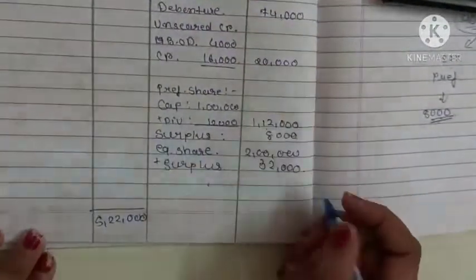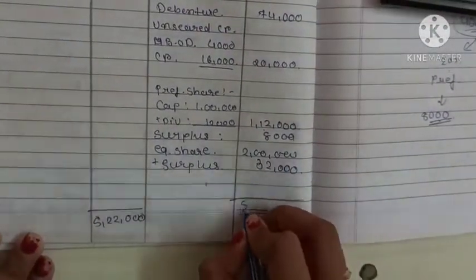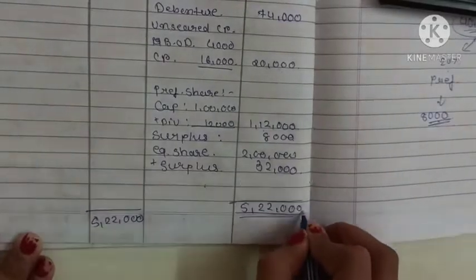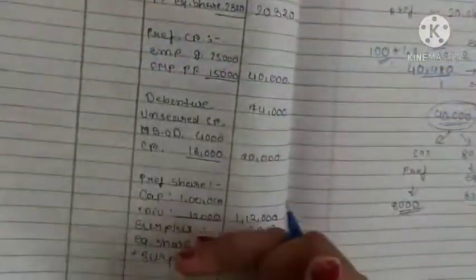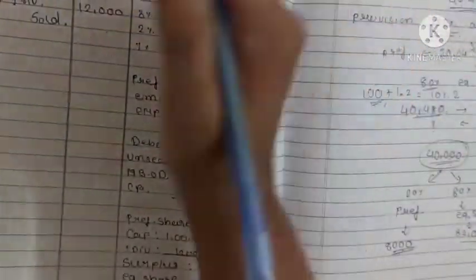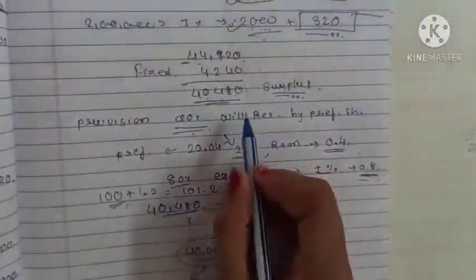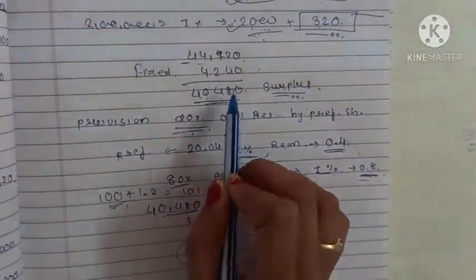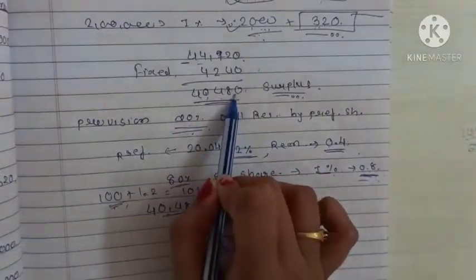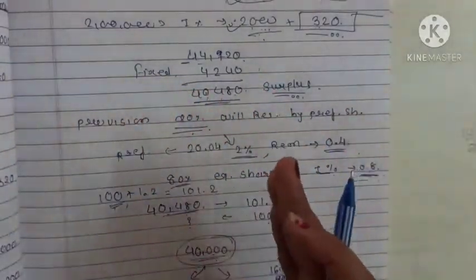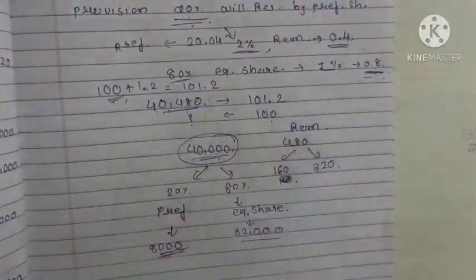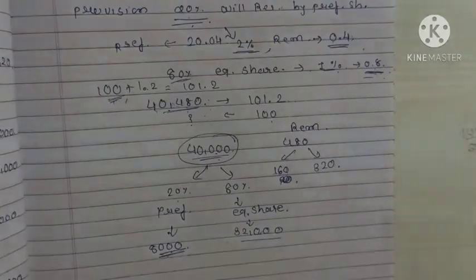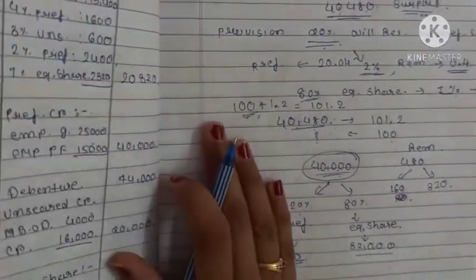Total here will be 5,22,000. Simple enough — the most important part is this final section. Until the earlier steps the format is the same, but in this you have to understand that remuneration is all included in the surplus figure, so we have to deduct and separate the surplus amount and remuneration amount in this manner. Understood? Okay, thank you.